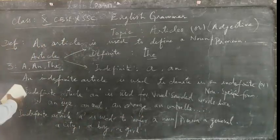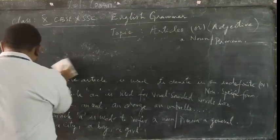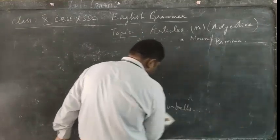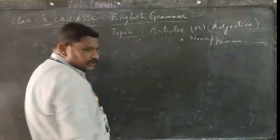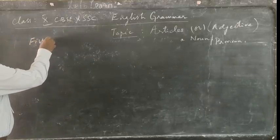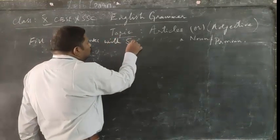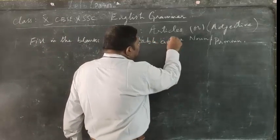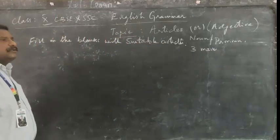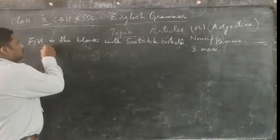Now let us also explain how the articles are used in various examples. In the question paper, we have a fill-in-the-blank type exercise where a running paragraph is given and we need to fill in the suitable articles. This exercise comprises three marks. Now some examples — like: 'I have dash one rupee coin.'